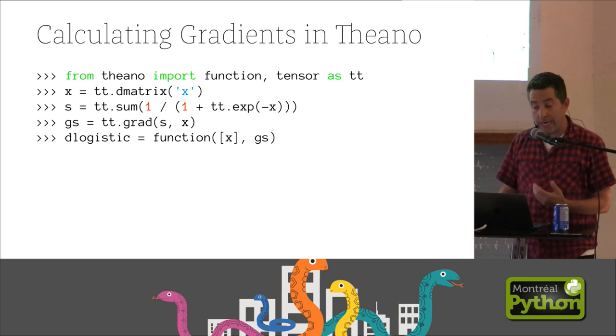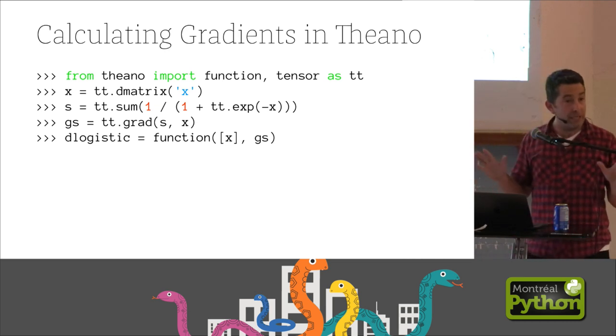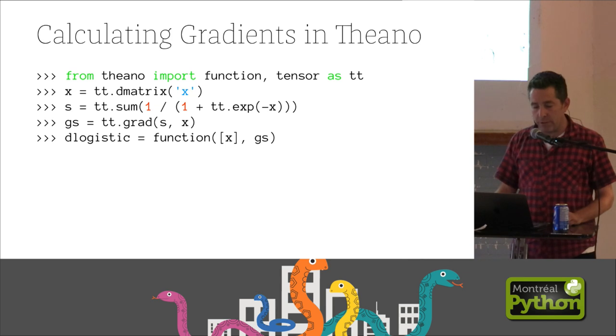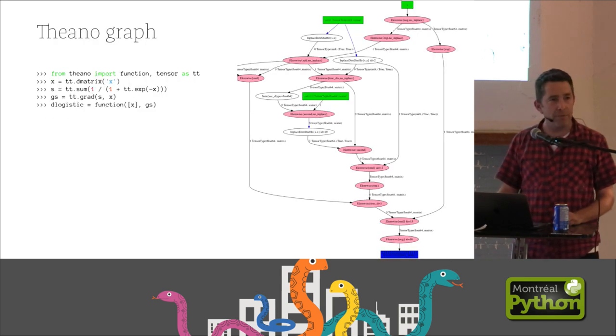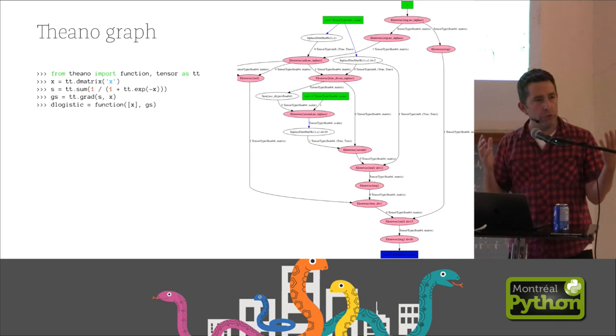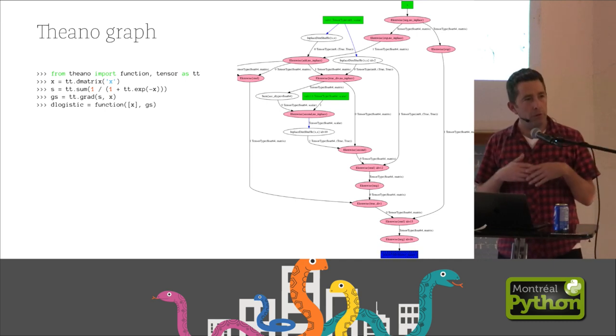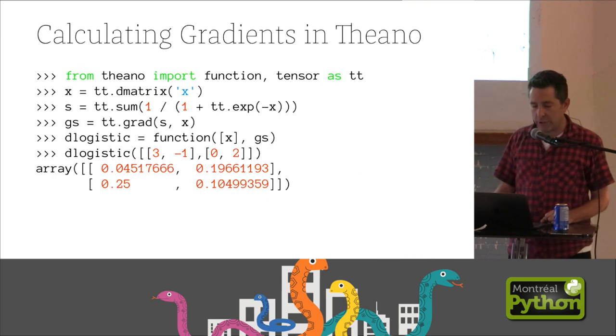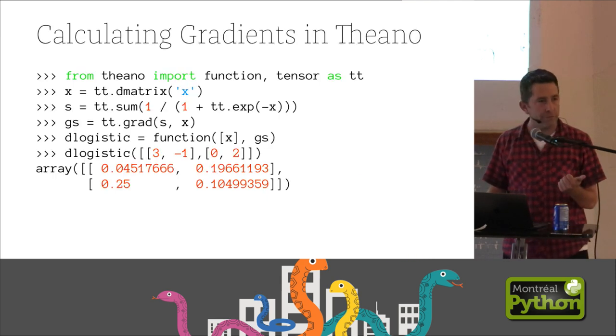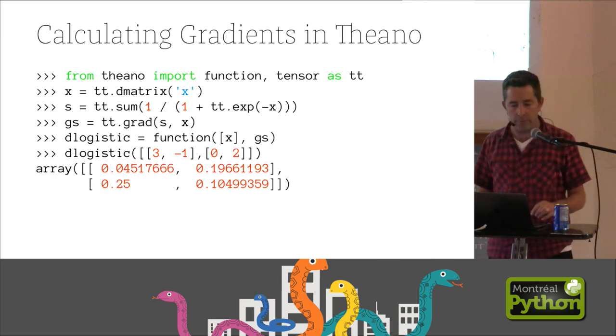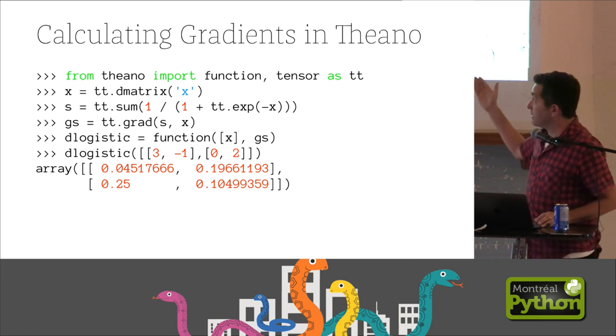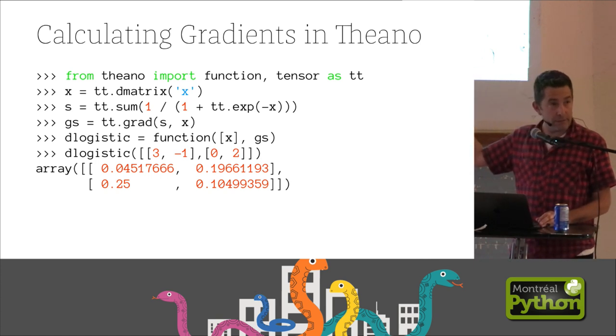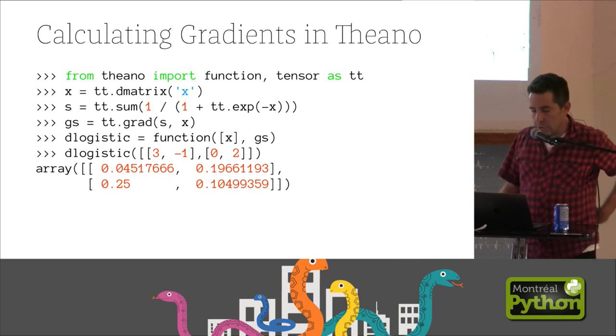And then you turn that into a function. Now, up till now, no calculation has occurred whatsoever. All that's being done here is a graph that's being built, a static graph that Theano can use. It will optimize. It will learn how to do the gradients over that whole thing. And then the only time it actually does anything is when you call the function for the first time. It will compile it to C and run it. So this is the gradient of matrix, transform matrix. So this is great. And this powers everything that's done.